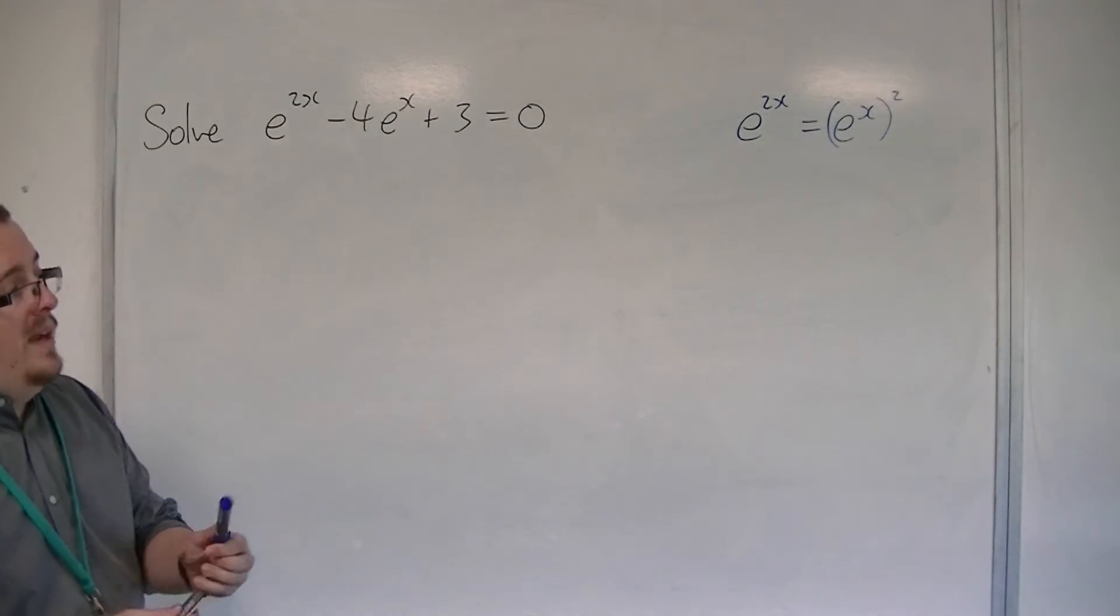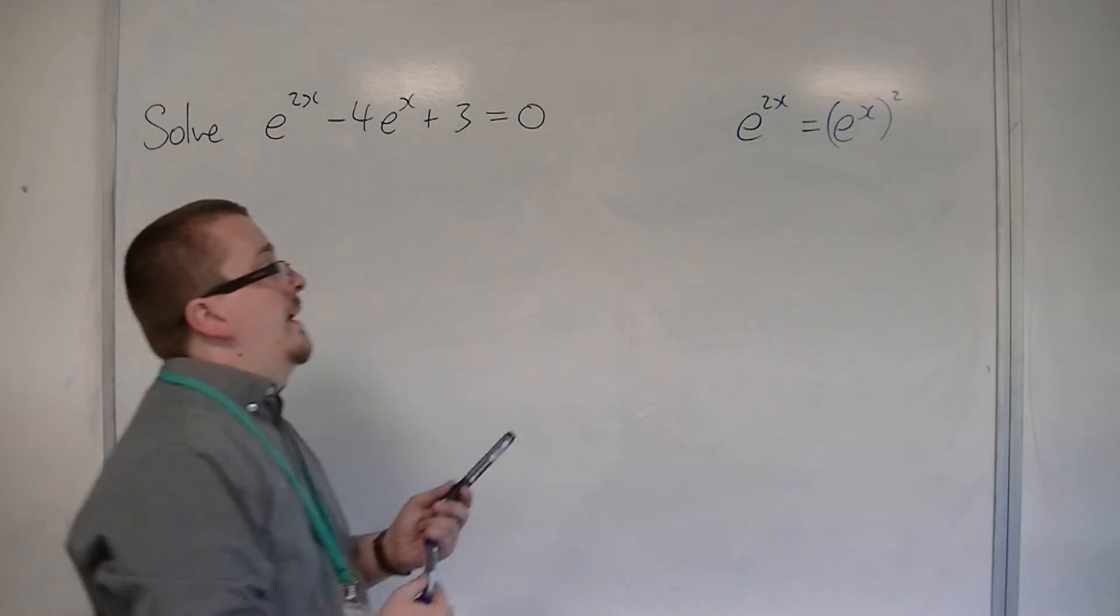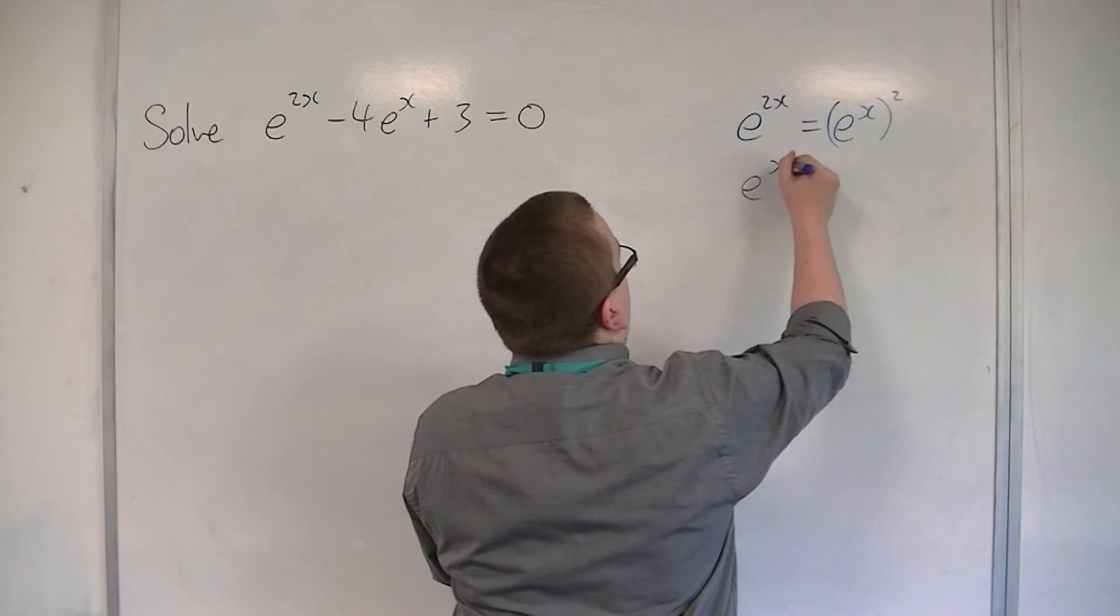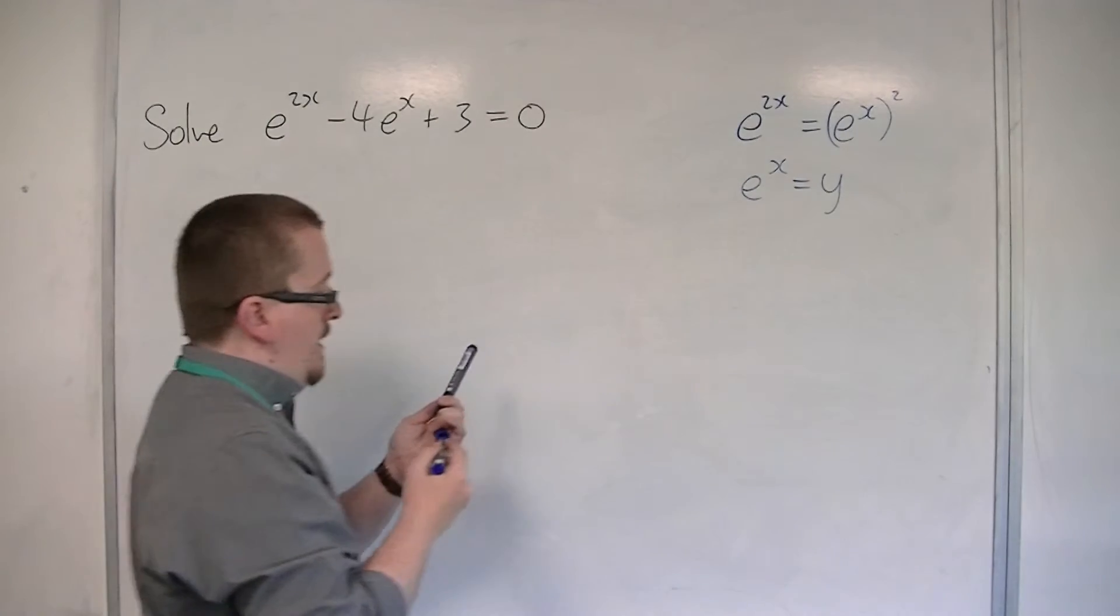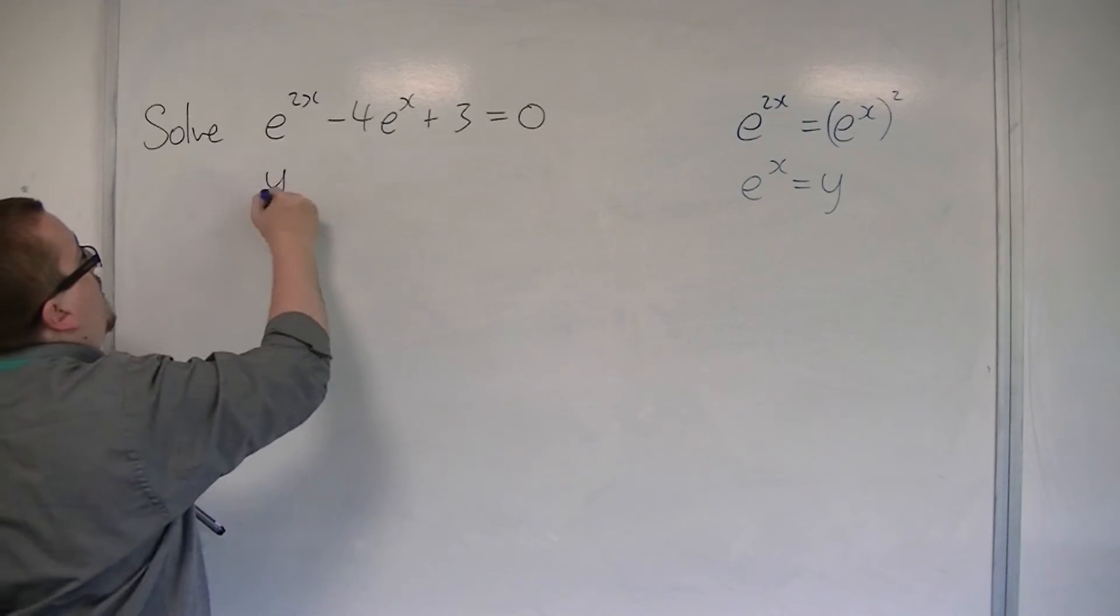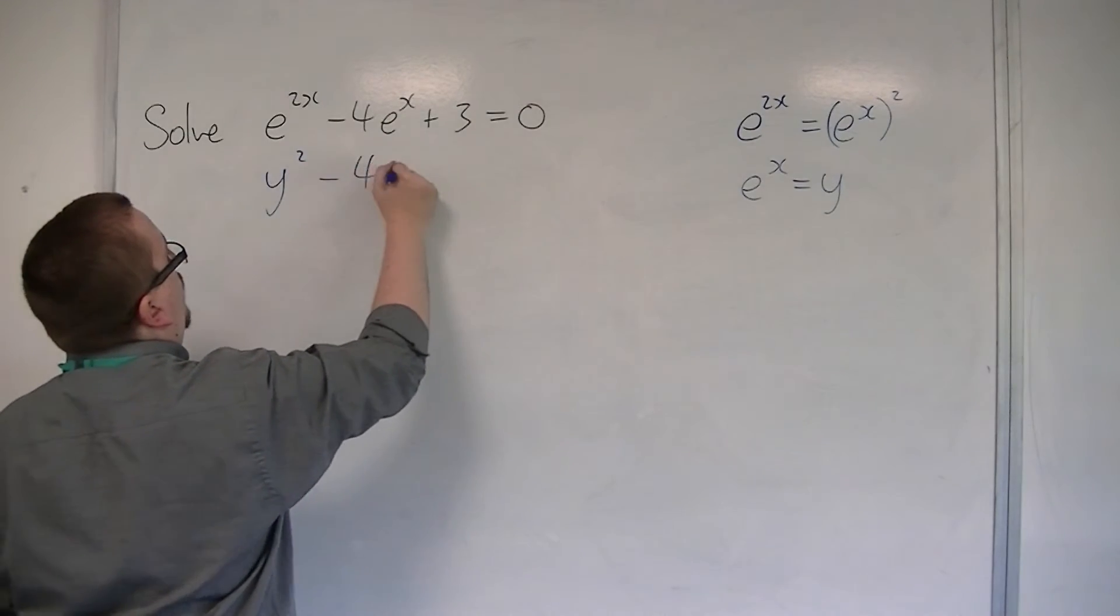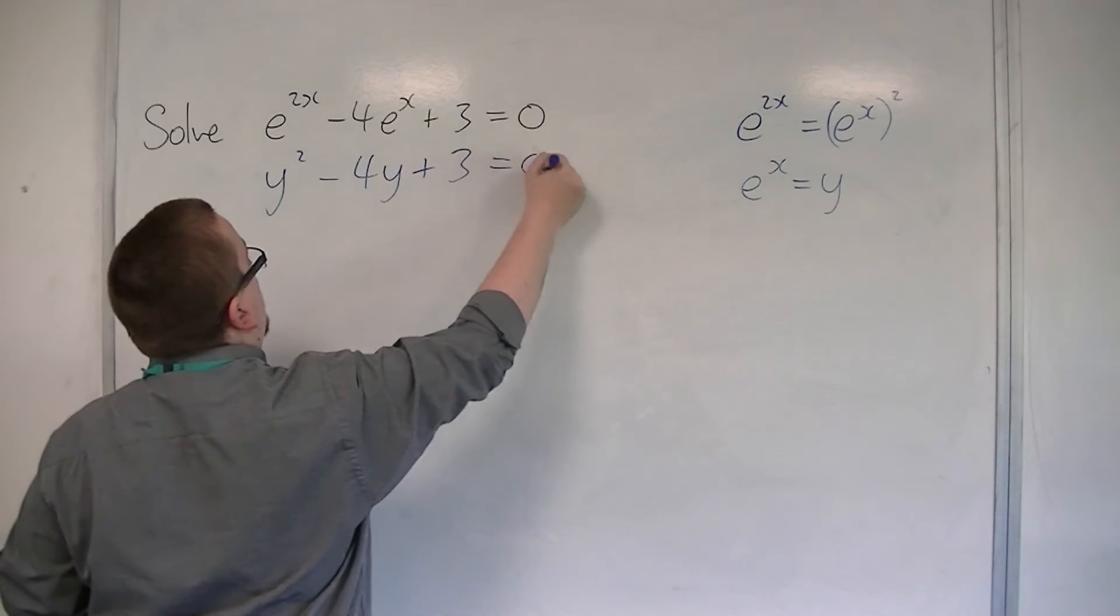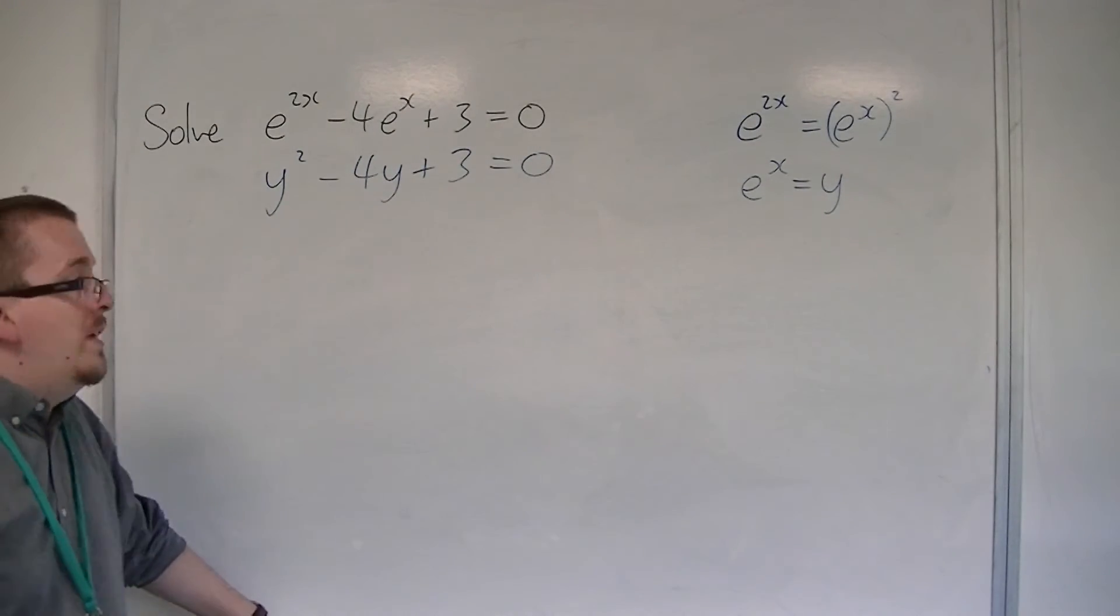So if I replaced e to the x with y, if I let e to the x be equal to y, then I would have y squared minus 4y plus 3 is 0. And now you can plainly see that it is a quadratic.